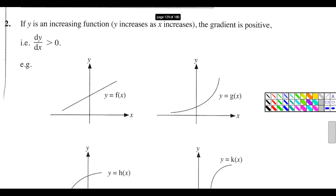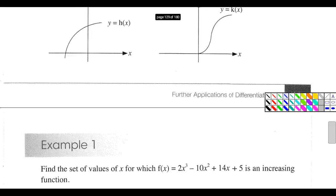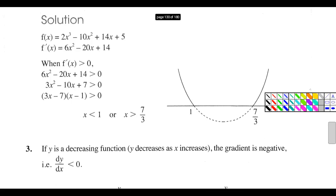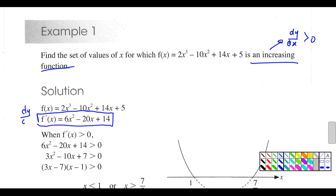If it's an increasing function, the linkage is dy/dx more than zero. For decreasing, it's the opposite, as we mentioned. So for example, if they say this is an increasing function, what happens? dy/dx more than zero. You can underline dy/dx and label it, because they say it's an increasing function.